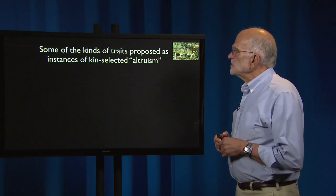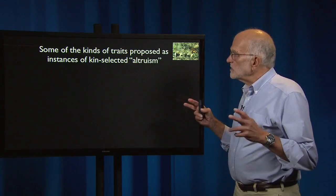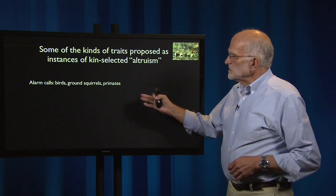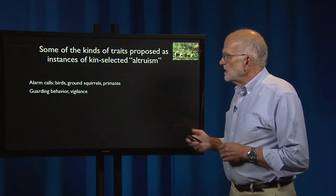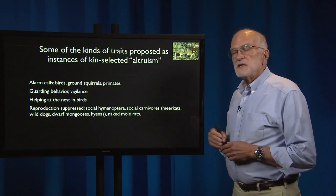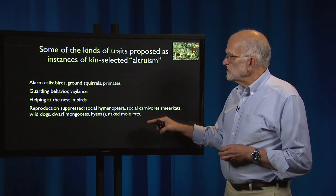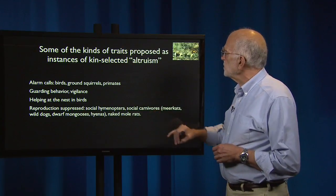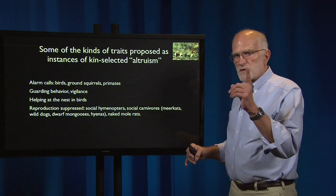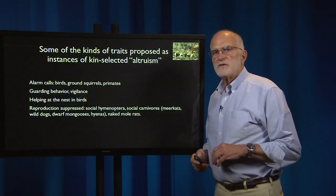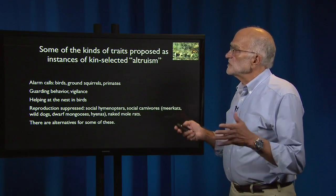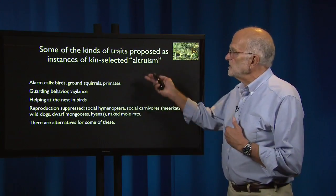Some of the kinds of traits proposed as instances of kin-selected altruism — acting to save others at a cost to yourself — include alarm calls in birds, ground squirrels, and primates; guarding behavior and vigilance; helping at the nest in birds; suppressed reproduction, which we see in bees, wasps, and ants; in social carnivores like meerkats, wild dogs, dwarf mongooses, and hyenas; and naked mole rats. Here we see some meerkats confronting a cobra — they have both suppressed reproduction with one female reproducing and the rest helping, and they have guarding behavior and vigilance. There are alternative explanations for some of these behaviors, but these are the kinds of things that behavioral ecologists explain as kin-selected.